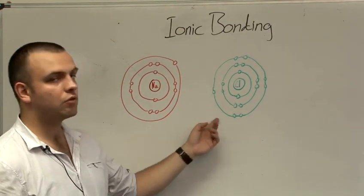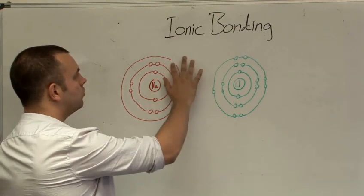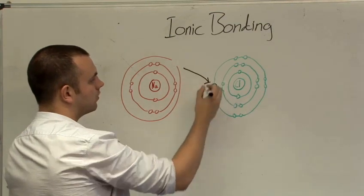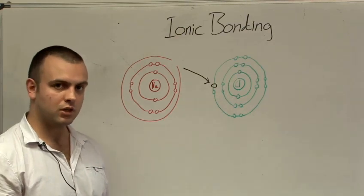So when sodium and chlorine react, it can do a sort of trade. If the sodium loses one electron and the chlorine gains that electron, both atoms now are more stable. They have full outer electron shells.